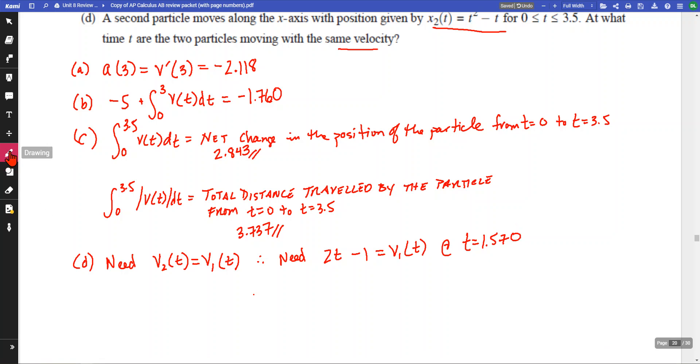Now, where are the marks for this particular problem? So for our first part, the acceleration of the particle, it's only worth one mark, and it must have the notation, right? V prime of 3, or A of 3.